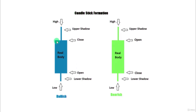The real body is the main part of the candle, and these thin lines are the shadows, also called wicks of the candle. These shadows indicate the high and the low of the session. In a green candlestick, this is the opening price and this is the closing price. This is the upper shadow, this is the lower shadow, this is the high of the candle, and this is the low of the candle.